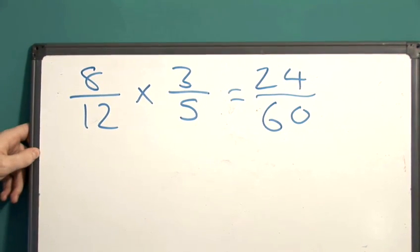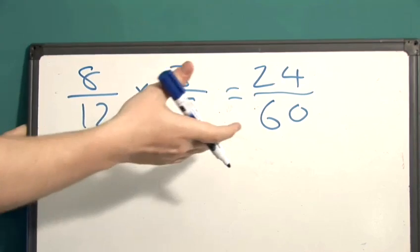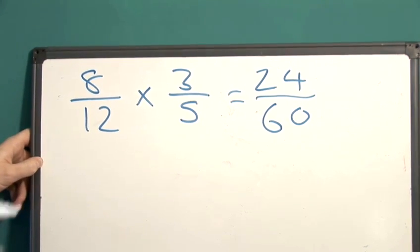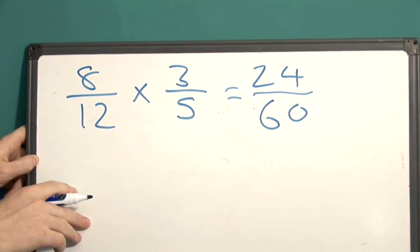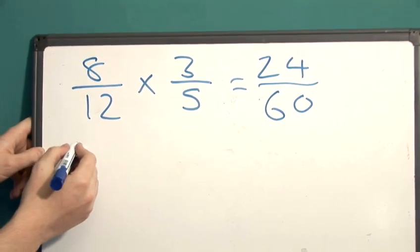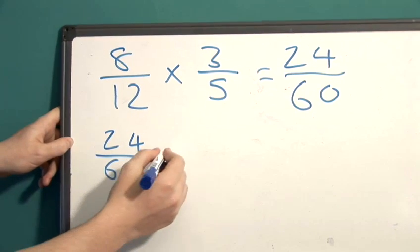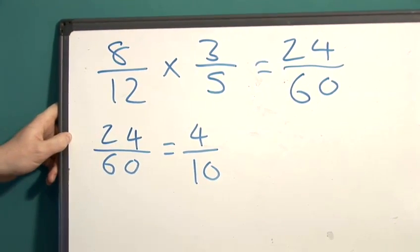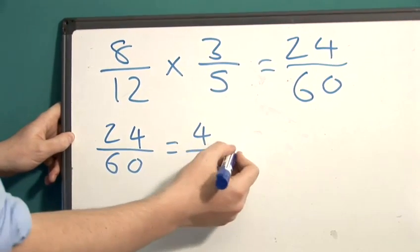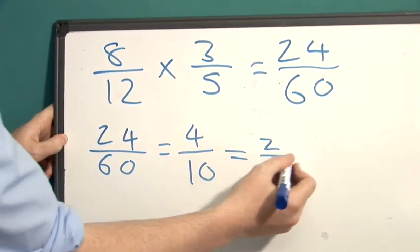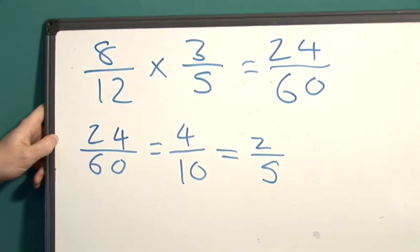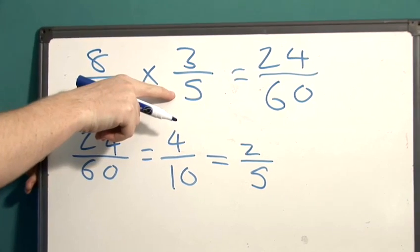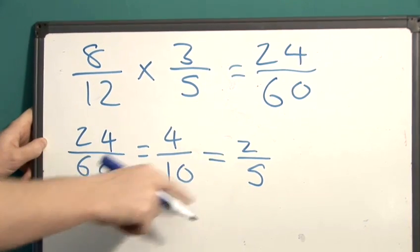However, there is another step here. If we remember whenever we're given a fractional answer, it's always best practice to simplify this. Twenty-four and sixty both have a common factor of six and this means that twenty-four divided by sixty can simplify to four over ten. Four and ten have a common factor of two which means we have two fifths. So the simplest answer to eight divided by twelve multiplied by three divided by five is two fifths.